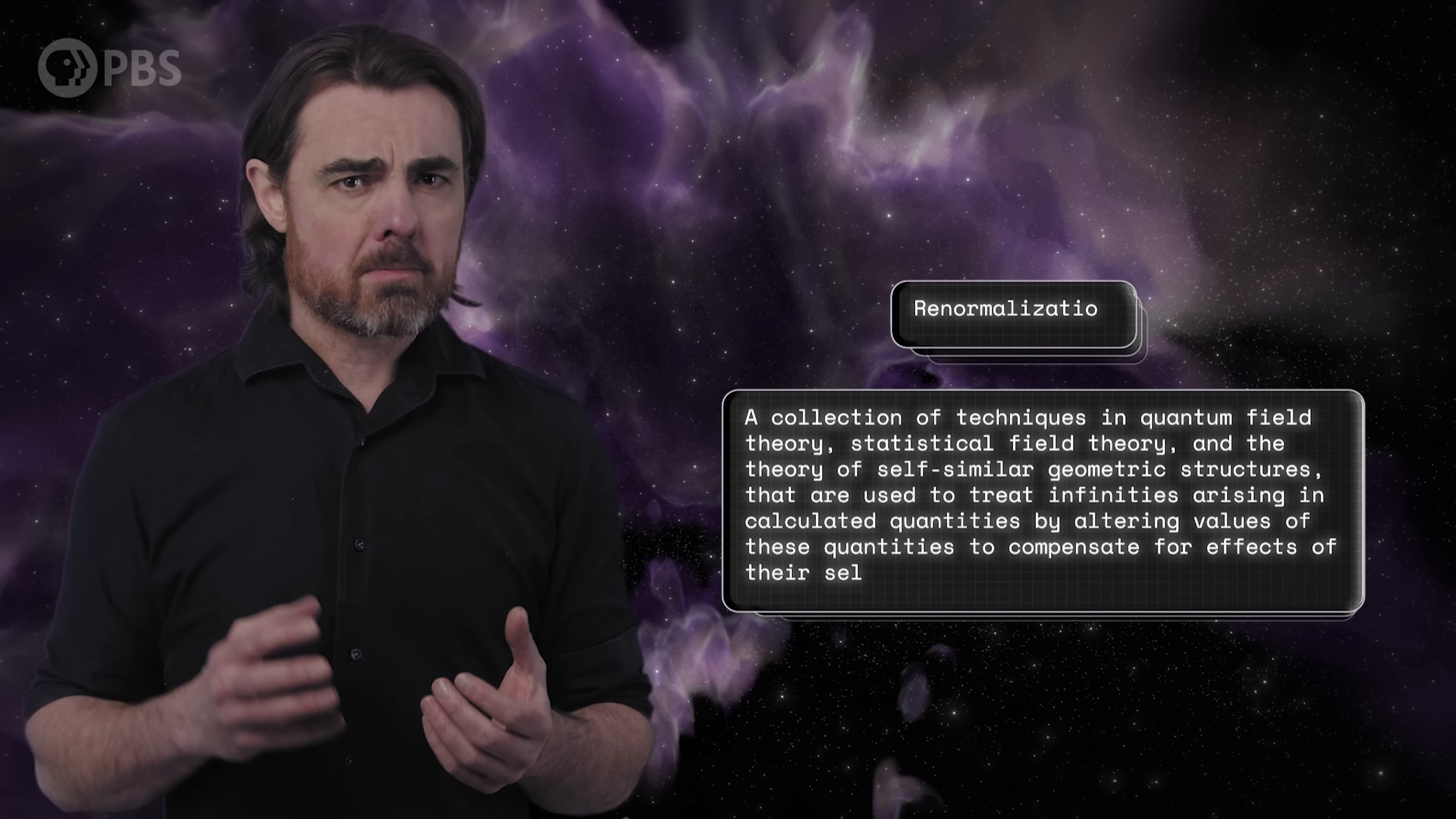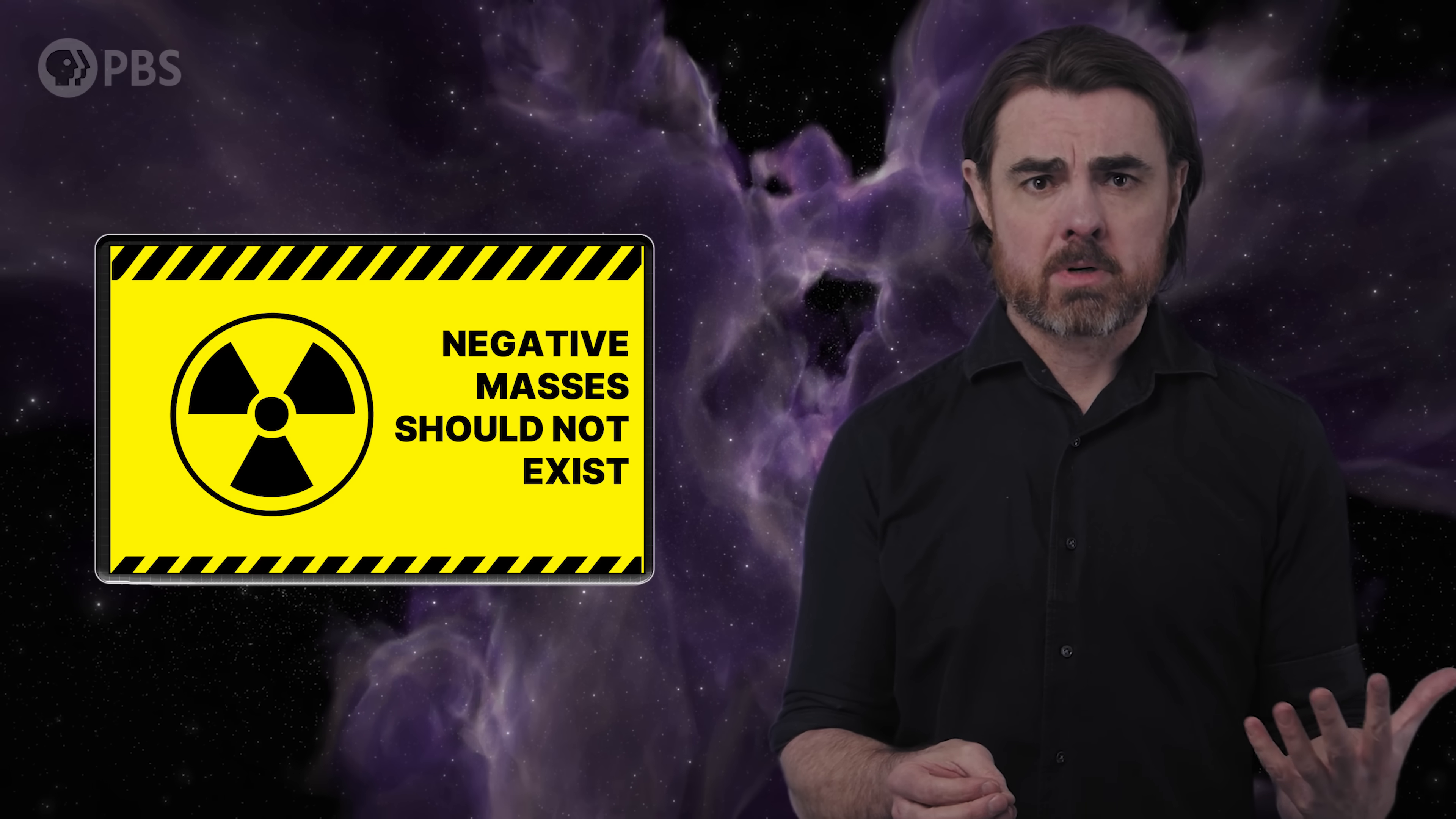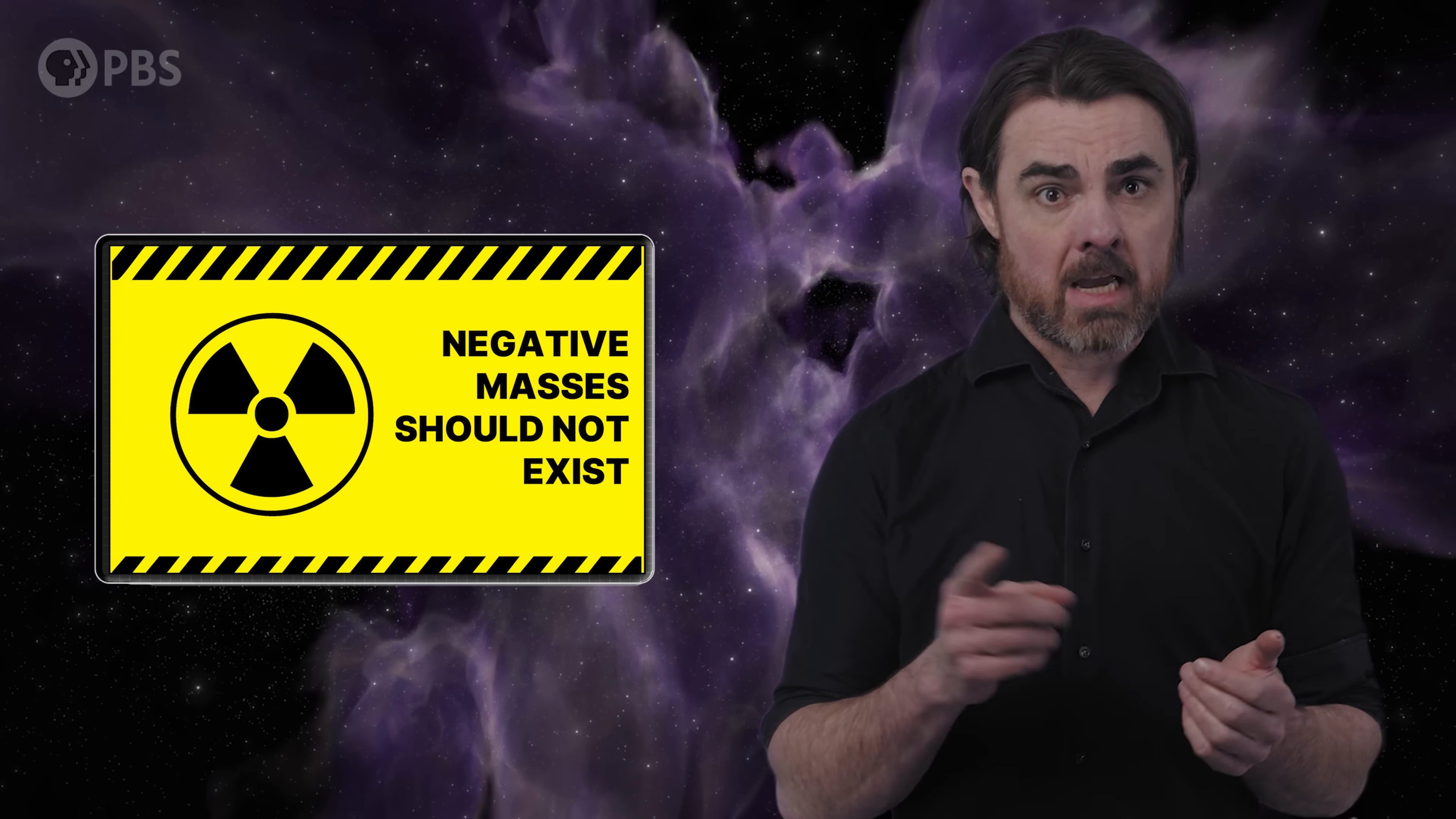This process of adjusting the internal contributions towards a measured quantity to eliminate infinities is called renormalization. It was first applied in cases like the electron before quantum mechanics was even invented, though it's since become a key tool in quantum field theory in particular. This sounds a little hokey for a number of reasons. For one, it assumes that some mass, in this case the bare electron, is negative. But negative masses aren't supposed to exist. However, remember that this bare mass is not something that we ever see or measure. So let's pretend that this odd assumption is okay for now.